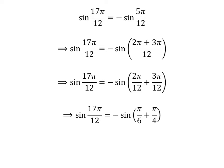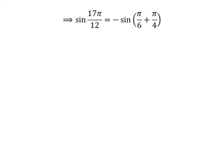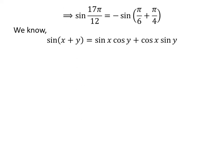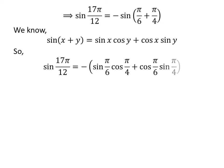Sine of 17 times pi upon 12 is equal to minus sine of pi upon 6 plus pi upon 4. We know the identity sine of x plus y is equal to sine of x times cosine of y plus cosine of x times sine of y. Applying this identity gives us sine of 17π/12 is equal to minus of sine of pi upon 6 times cosine of pi upon 4 plus cosine of pi upon 6 times sine of pi upon 4.